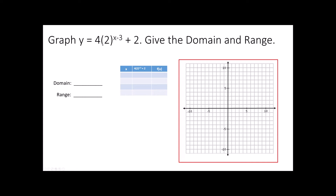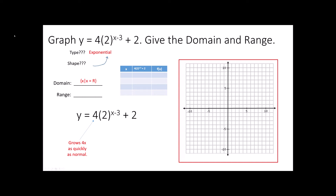Here's another one. y equals 4 times 2 to the x minus 3 plus 2. It says give the domain and range. I first want to ask myself: what type is it? My x is in my exponent, so I know it's going to be exponential. Then I'm going to ask myself what shape it makes — I know this is going to be a curve, just like the last one, because all exponential functions make a curve. The domain is all real numbers because this graph is going to go to the right forever and to the left forever.